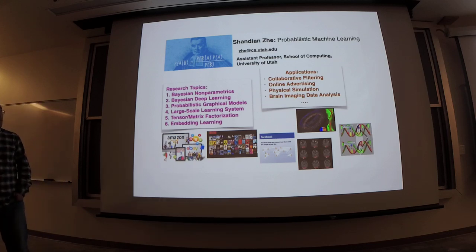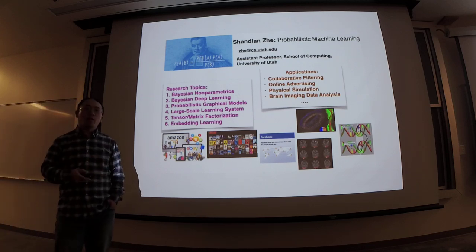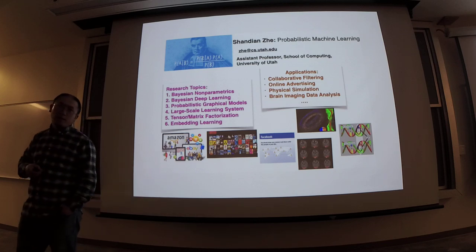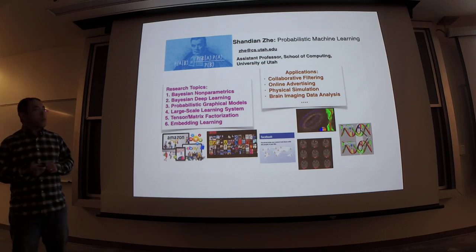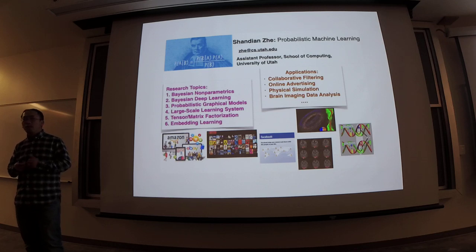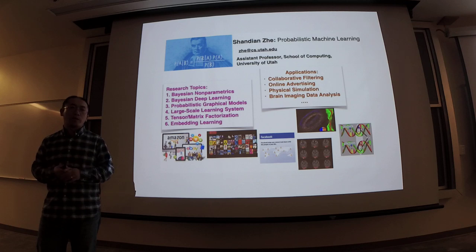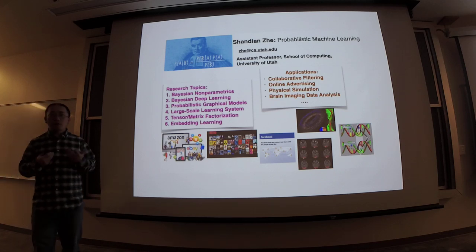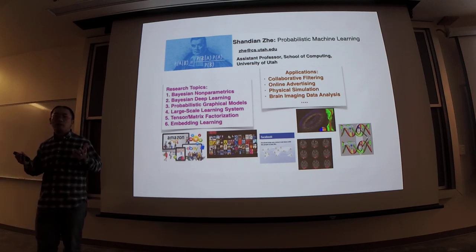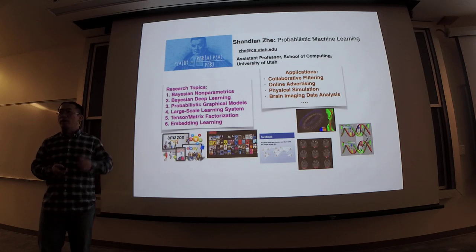I focus on a branch of machine learning — probabilistic machine learning, or Bayesian machine learning. I like to use Bayesian principles of probability theory and framework to formulate and solve machine learning problems. In the Bayesian world, everything is viewed as random variables. Modeling is to construct a prior distribution, and inference is to ask for the posterior distribution. But this will not be covered in our class.